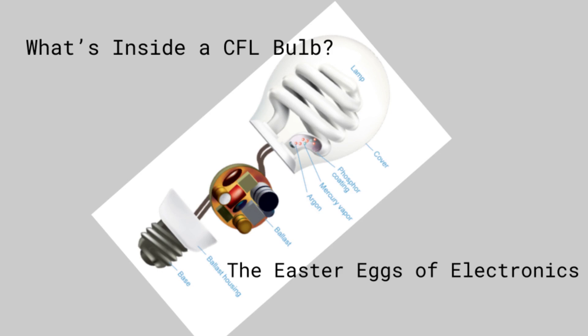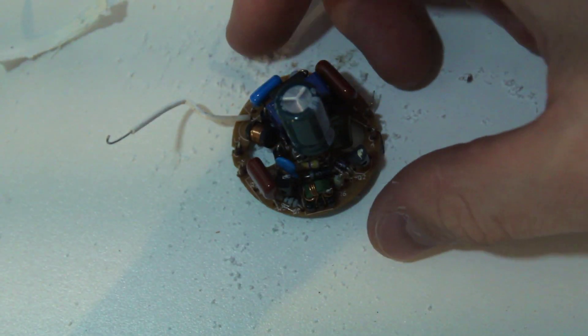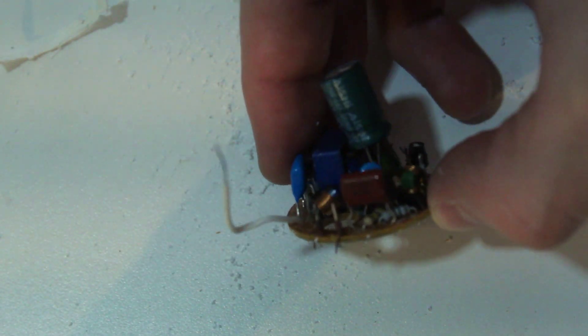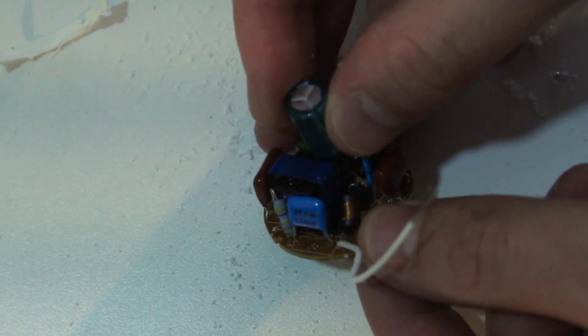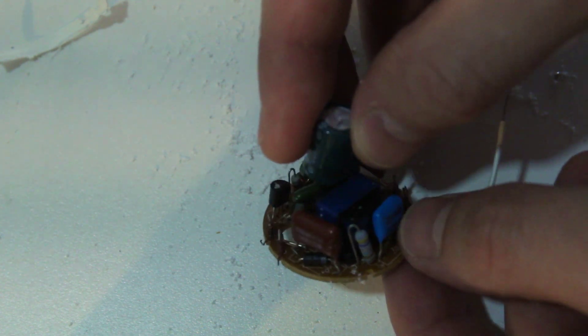Compact fluorescent light bulbs, or CFLs, have a lot of electronic components that you can salvage. Electrolytic capacitors, polyester film capacitors, inductors, diodes, which are very useful.